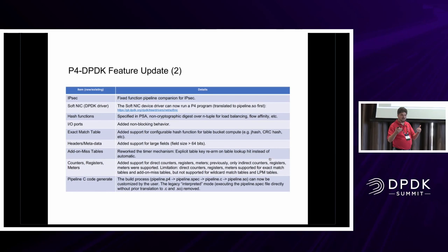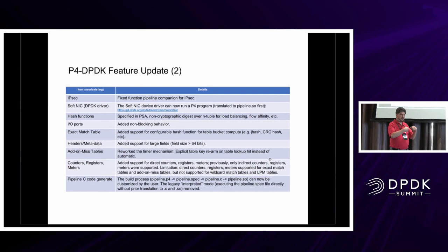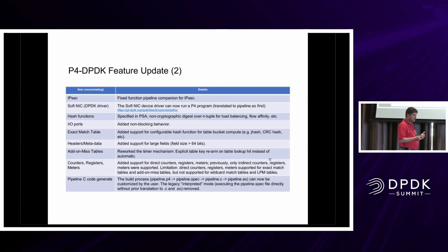The control plane doesn't need to populate or free the meter index when a flow is released. In a hash table, you can devise it so that when you get the key you also get an ID, and that ID can be used as the index into the meter table. We enabled this for exact match tables and LPM only — not for wildcard match tables because the DPDK algorithm doesn't support a unique key identifier there. We also enabled the compiled mode for the pipeline, replacing the old interpreted mode.